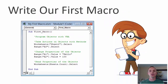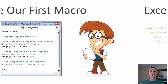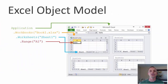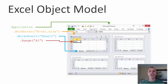In the first video, we write our first macro. And as you can see, our friend Andy is back, and he's really excited about it. And then I also explain the Excel object model. If you ever wondered what all those dots mean between the words, how the macro runs, what order it runs in, and all that kind of stuff, I explain all that in the first video.